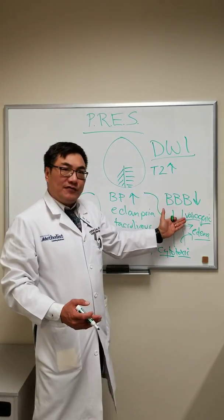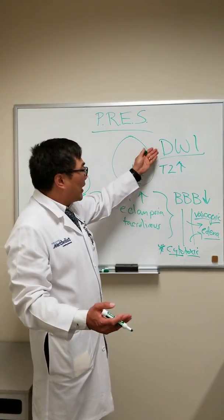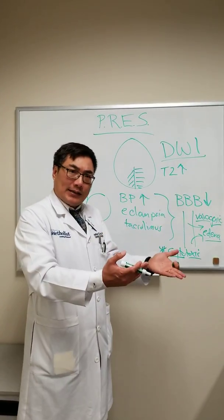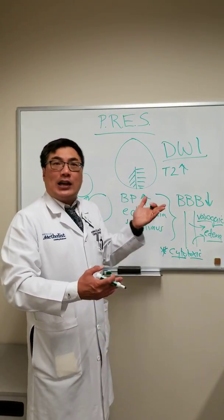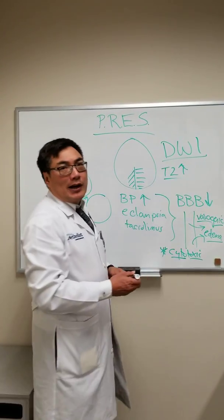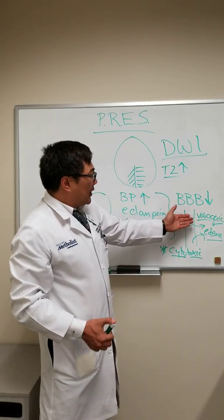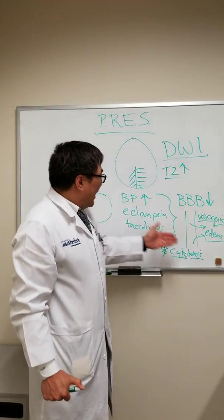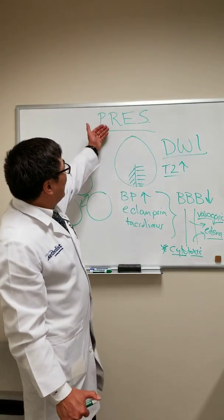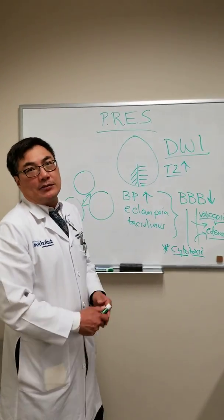In contrast, if it's just vasogenic edema, either the DWI is normal, or the DWI and the ADC are both hyperintense — and that's T2 shine-through. So if it just shines through all the sequences: bright on T2, bright on DWI, and bright on ADC, that is more suggestive of vasogenic edema. And in the right clinical setting — hypertension, eclampsia, or medications — that's more likely to be posterior reversible encephalopathy syndrome.